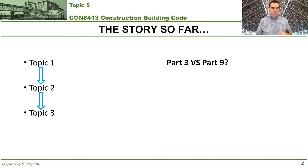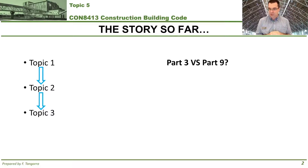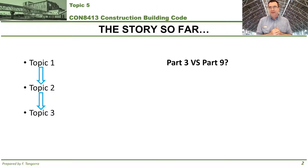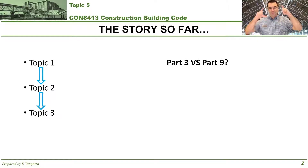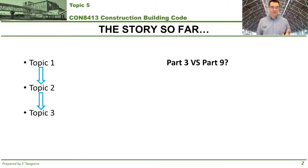Topic 3 then brought you to being able to distinguish between part 3 and part 9 type buildings, because that allows you to determine whether the building you're analyzing, designing, or investigating is subject to the requirements of part 3 or part 9 of volume 1, division B of the Ontario Building Code — which is very important, as both are very large sections.